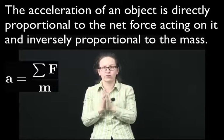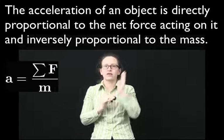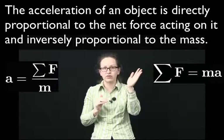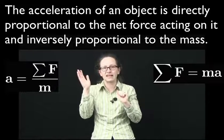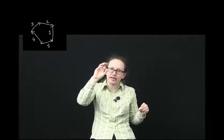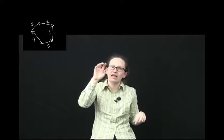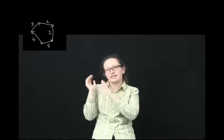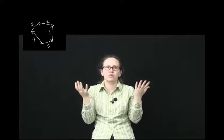Newton's second law is often written as: the net force acting on an object — the sum of all the forces — is equal to the mass times the acceleration. We saw an example with masses on the board where all the forces added up to zero, so there was no net force. Newton's second law tells us that if there's no net force, the acceleration is zero — which is indeed what we observed.